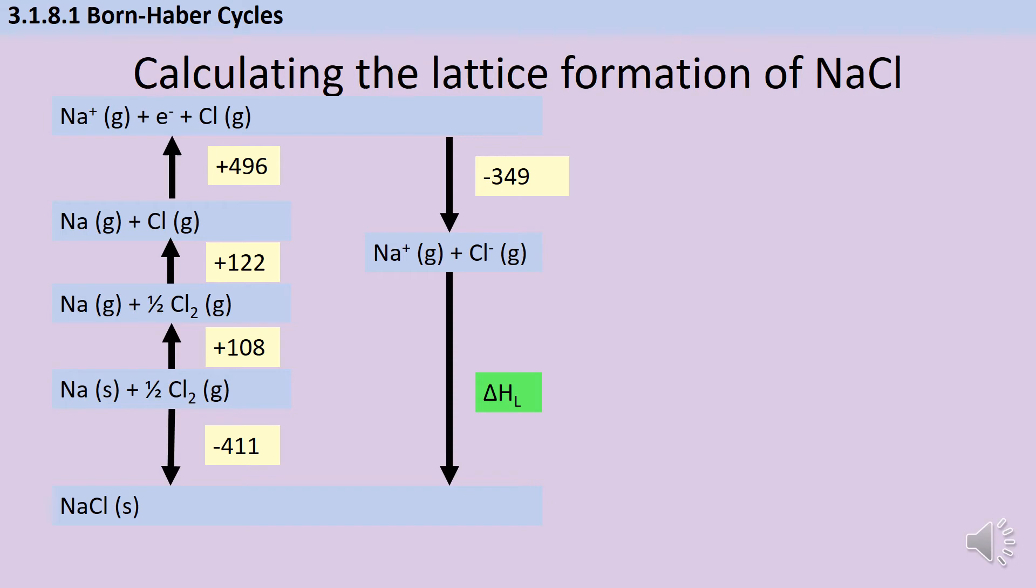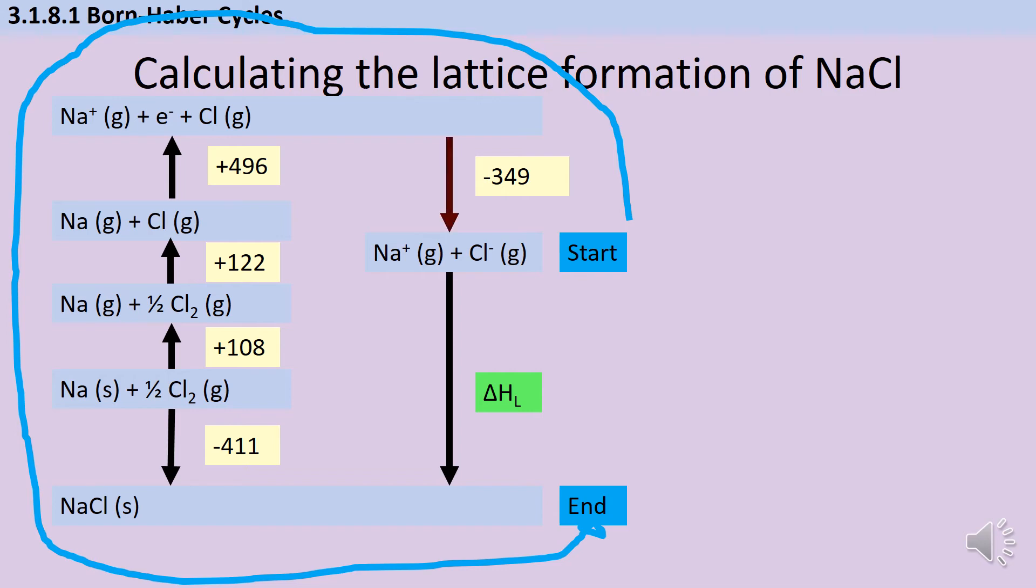If you've seen my Hess cycle videos, then you know that I always like to write start and end at either end of the arrow I'm trying to find the value of, because when I do this, it's going to make sure that I actually follow the cycle the right way round, and don't give away two-thirds of the marks because I've got the wrong sign on my answer. So I'm going from start to end. And to do that, I need to go the wrong way up this electron affinity arrow, the wrong way along these three arrows,